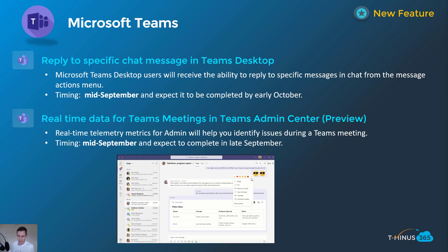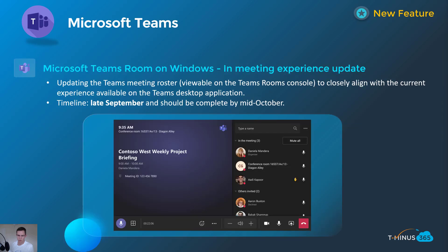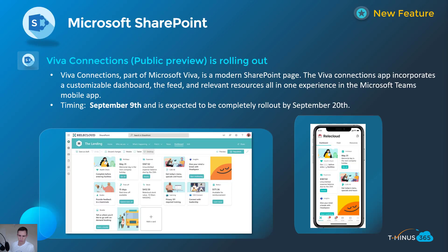This will be happening mid-September and complete in late September. Next, Microsoft Teams Rooms on Windows. If you're not using Teams Rooms today in a physical meeting room, this isn't really going to be relevant to you. But essentially they're going to align this experience much like your desktop experience, with familiar features such as spotlight capabilities, the ability to perform actions against users, and see reactions. This will happen in late September and should be complete by mid-October.